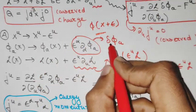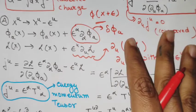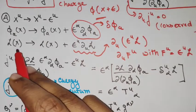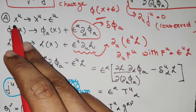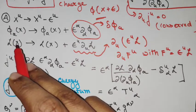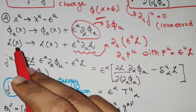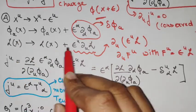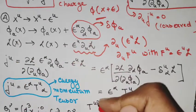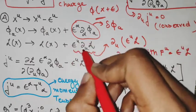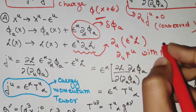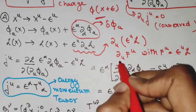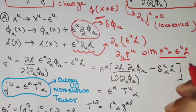Similarly, the Lagrangian — which is a function of phi and the derivative of phi, with phi depending on x — has an implicit dependence on x and changes accordingly. We can bring this change into the form of a total derivative, del_mu f^mu, and identify what f^mu is.